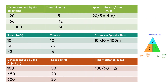Now let's recall how to calculate speed using the formula triangle. In this triangle, S is speed, D is distance, and T is time. To find speed: distance divided by time. To find distance: speed multiplied by time. To find time: distance divided by speed. Keeping this triangle in mind makes calculations very easy.